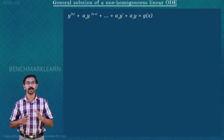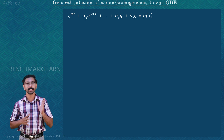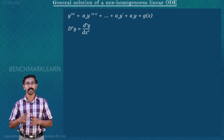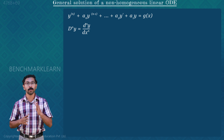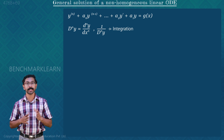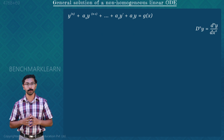Recall that in the first module, we use the notation D^n · y for the nth derivative of y. That is, D^n · y is equal to d^n y / dx^n. On the other hand, 1/D^n · y denotes the integration of y n times. We can use this symbolic form.